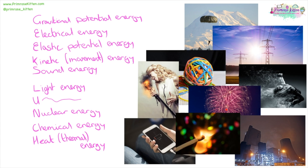With fireworks, it is stored as chemical energy, then transferred into kinetic energy as it moves up. As it explodes we have light, heat, and sound energy coming out, and then gravitational potential energy as it starts to fall, followed by kinetic energy as it falls back down.